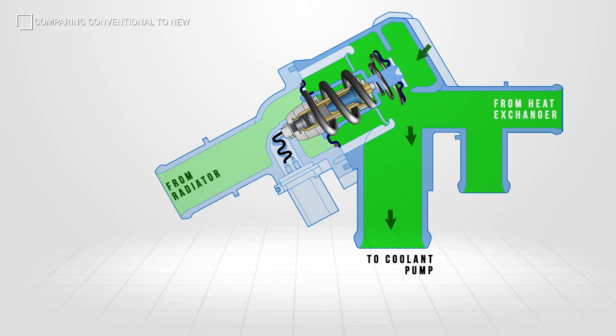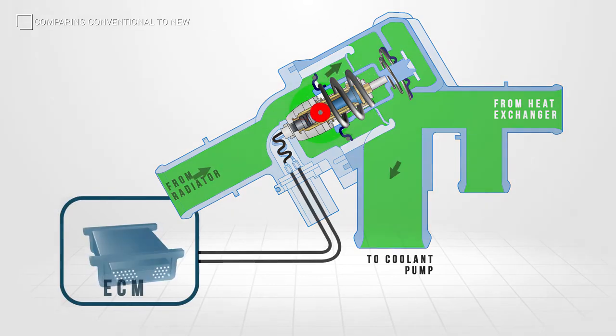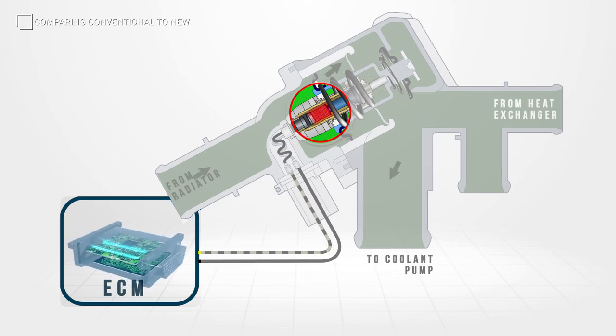An electronically controlled thermostat can be opened or closed independent of coolant temperature via an internal heating element and return spring. This means the ECM can adjust the amount of coolant flow by controlling the heater within the thermostat.